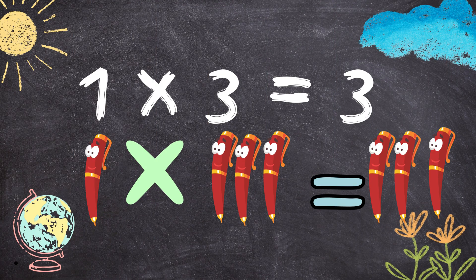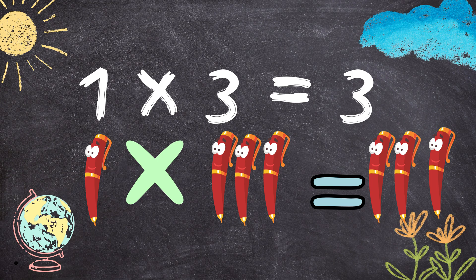1 times 3 is 3. 1 pen multiplied by 3 pens will give you 3 pens.